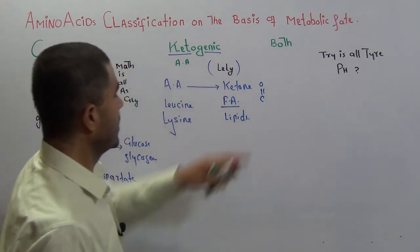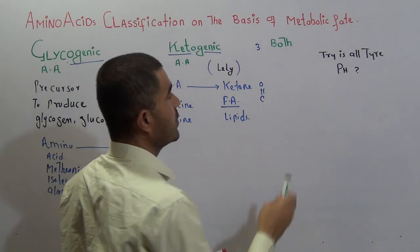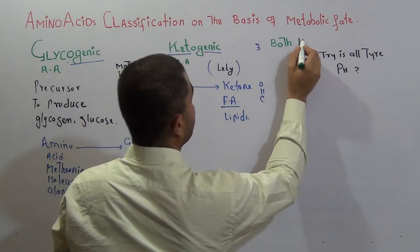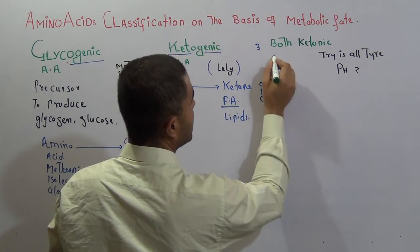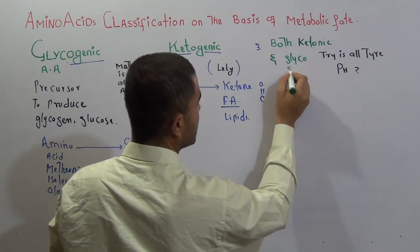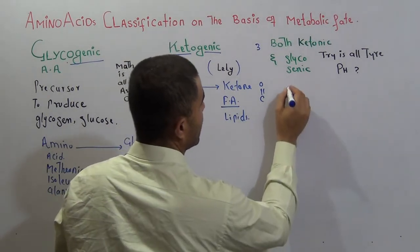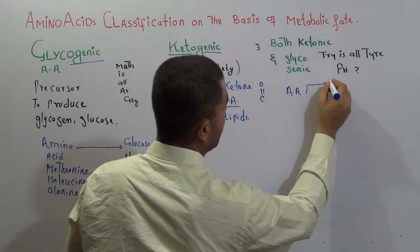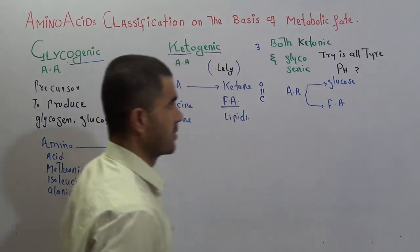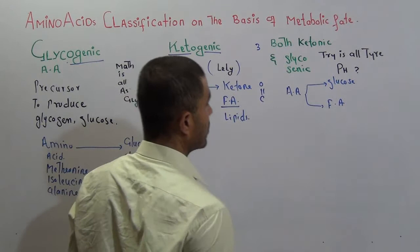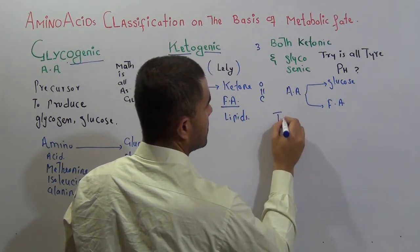And then we have another third category that I have mentioned as both, means there are some amino acids that can give us ketonic compounds as well as glycogenic compounds, both ketonic and glycogenic. There are some lucky amino acids as well, means these are the amino acids, like here I will write amino acid, it can either give us glucose as well as fatty acid depending upon the condition. So such lucky amino acids are called as both glucogenic and ketogenic.